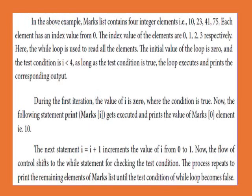In the above example, the marks list contains 4 integer elements. Each element has an index value starting from 0, so the index values are 0, 1, 2, 3 respectively. The while loop is used to read all the elements. The initial value is 0 at the start index. The condition is i less than 4. As long as the condition is true, the loop executes and prints the corresponding output.